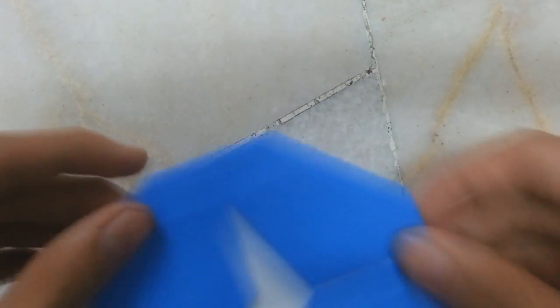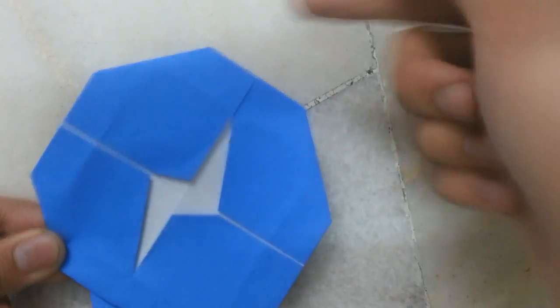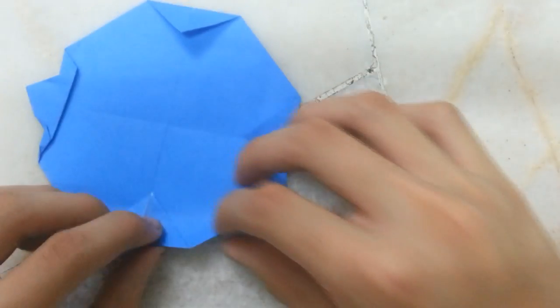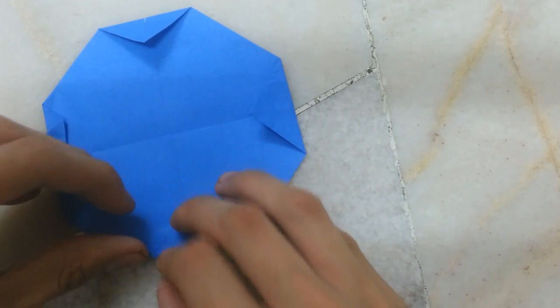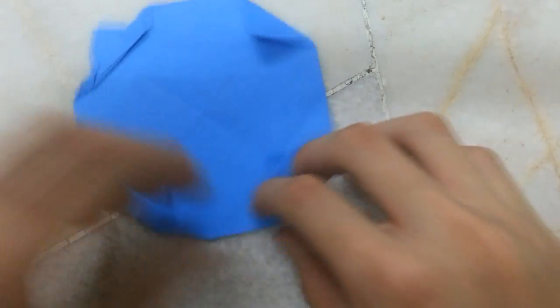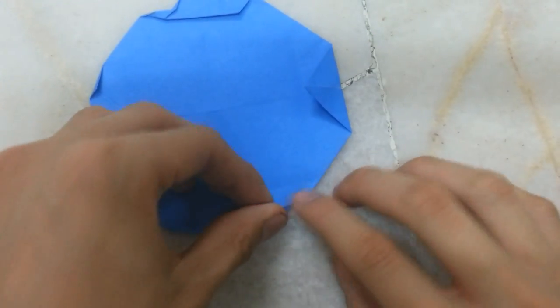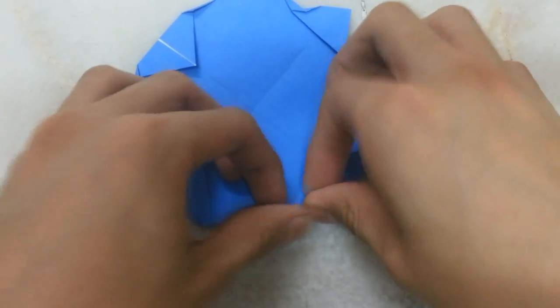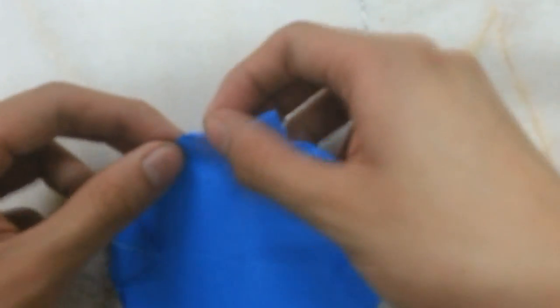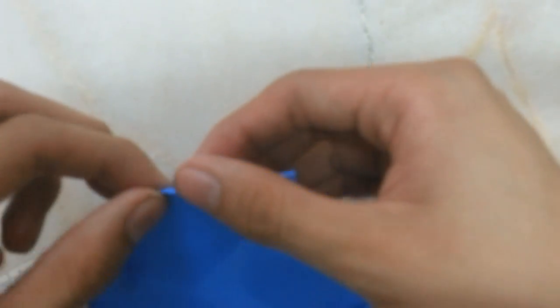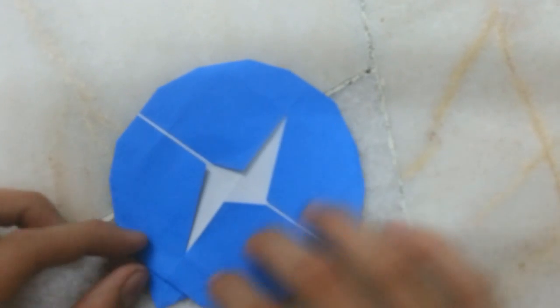Then turn over. Basically you can shape more round making tiny mountain fold like that. Then you are done.